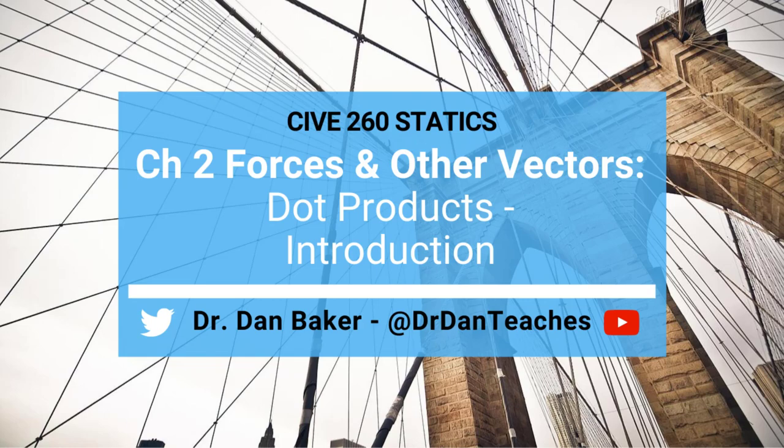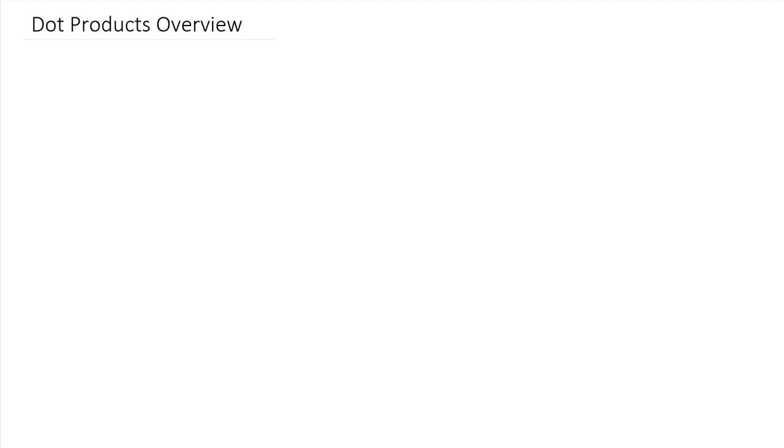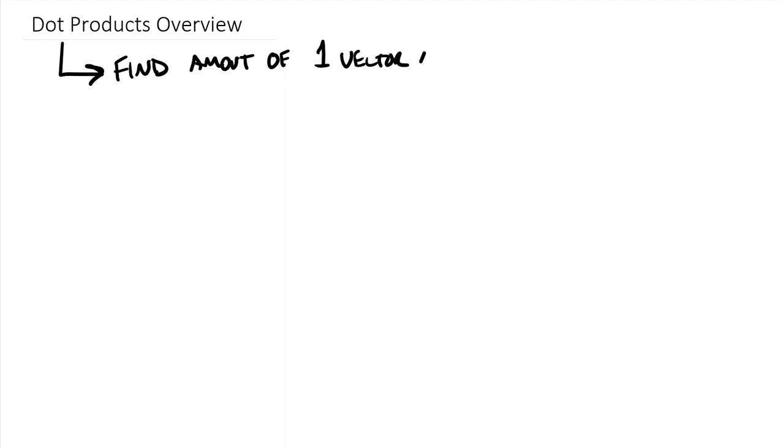Hello students, this is Dr. Dan Baker, and in today's video we are going to take a look at dot products. Dot products are one of two different ways that we can multiply vectors — there is no actual vector multiplication; we either take dot products or cross products. Their fundamental use is to find the amount of one vector which is along another vector.